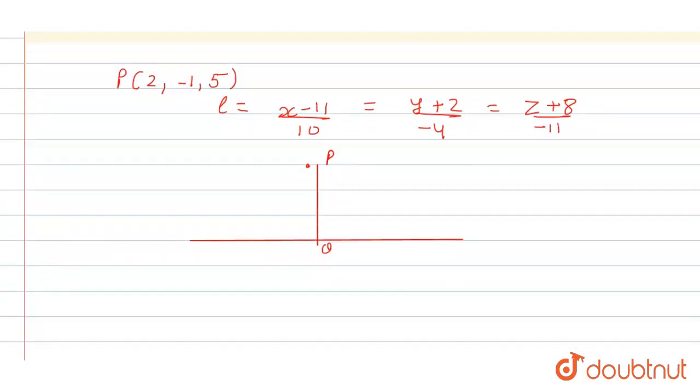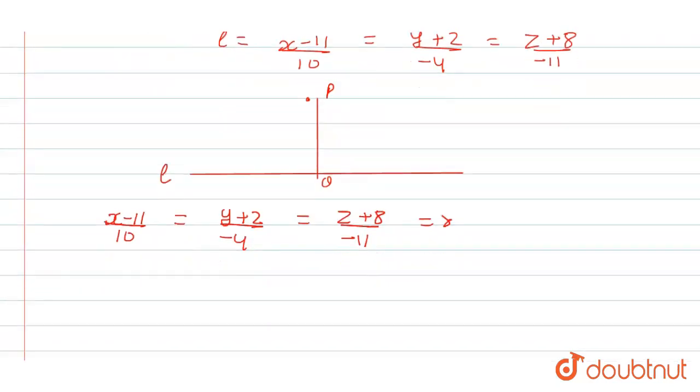So first of all, let's put our equation (x - 11)/10 = (y + 2)/(-4) = (z + 8)/(-11) = R. To find Q coordinate, because if Q is coordinate of PQ line, that means it should also pass the line L because it is lying on the line L. So that's why we are putting here R.